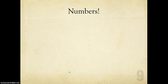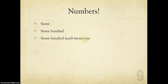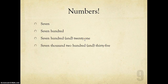Numbers are fairly simple to remember. Seven. Seven hundred — notice there is no S on hundred. Seven hundred and twenty-one. When I have numbers from one to one hundred, I put a hyphen between them. Seven thousand two hundred and thirty-five — again the hyphen.